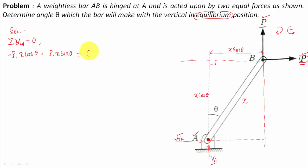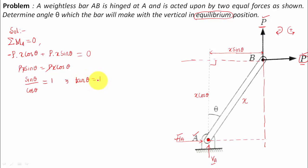Equating to zero: P·x·sinθ − P·x·cosθ = 0. P and P cancel, x and x cancel, giving sinθ/cosθ = 1, so tanθ = 1. Therefore θ = 45°. For everything to stay in equilibrium with these two forces applied at point B, the bar AB must make an angle of 45° with the vertical.